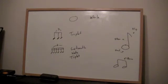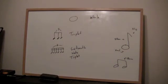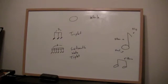So a regular eighth note triplet sounds like: one, two, three, four — one, two, three, four — one, two, three, four. And a sixteenth note triplet is even denser, fitting six evenly-spaced notes into each quarter note beat.